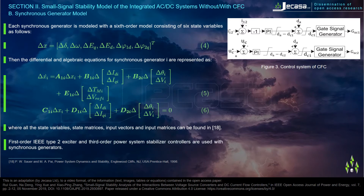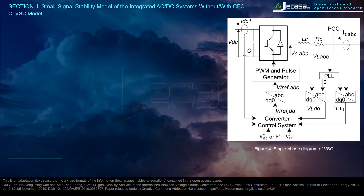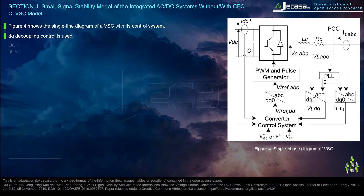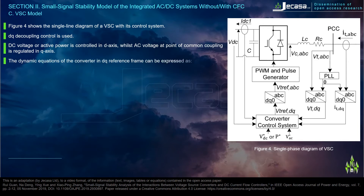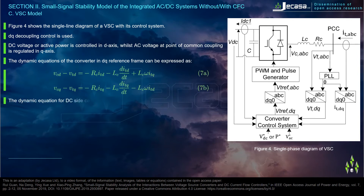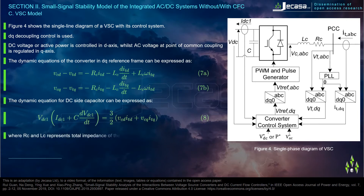The VSC model: Figure 4 shows the single-line diagram of a VSC with its control system. DQ decoupling control is used; DC voltage or active power is controlled in the d-axis, whilst AC voltage at the point of common coupling is regulated in the q-axis. The dynamic equations of the converter in the DQ reference frame and the dynamic equation for the DC-side capacitor can be expressed accordingly, where Rc and Lc represent the total impedance of the phase reactor and converter transformer.